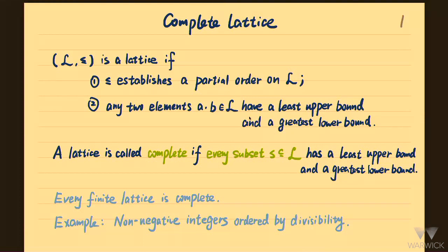The Tarski fixed point theorem works in a complete lattice. A lattice is a set with a binary operation that establishes a partial order on the set, and for any two elements they should have a least upper bound and a greatest lower bound.